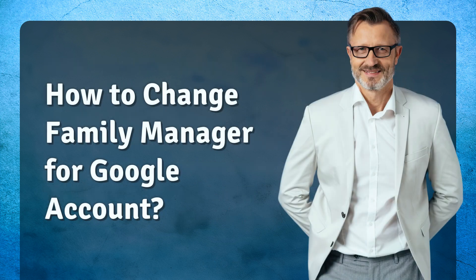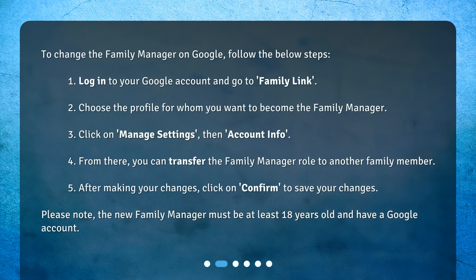How to change the family manager for a Google account? To change the family manager on Google, follow the below steps. 1. Log in to your Google account and go to Family Link. 2. Choose the profile for whom you want to become the family manager. 3. Click on Manage Settings, then Account Info. 4. From there, you can transfer the family manager role to another family member. 5. After making your changes, click on Confirm to save your changes.